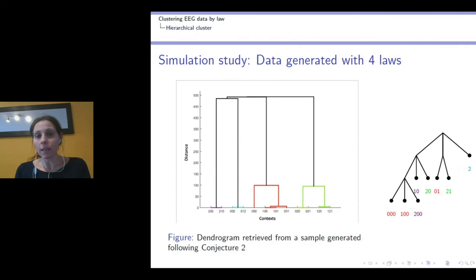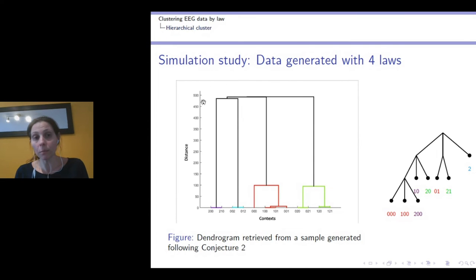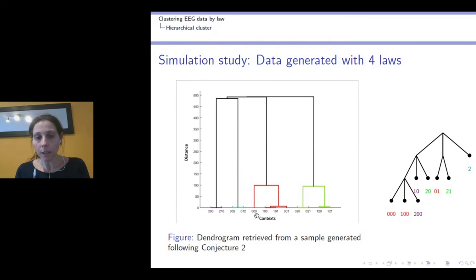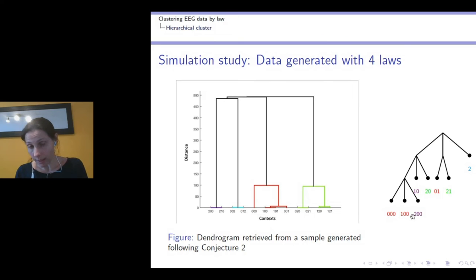For data generated with four laws, again the four-cluster structure is easily retrieved, as the partition occurs at a very high height of the dendrogram. We use a key color to identify the clusters, and for instance all clusters ending in a random position following a constituent silent unit are identified in red.